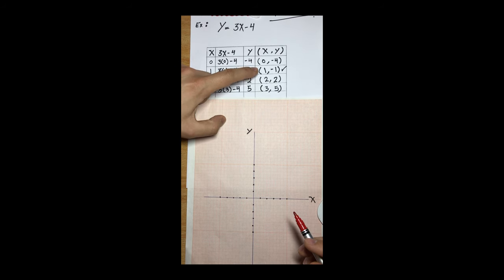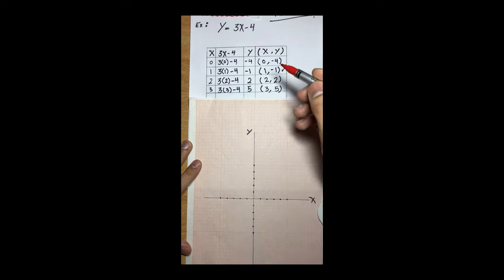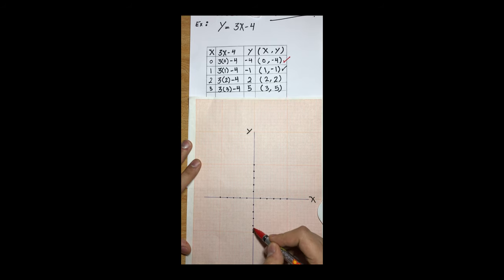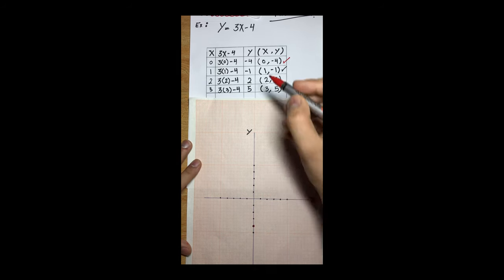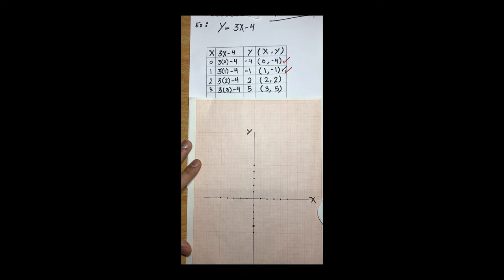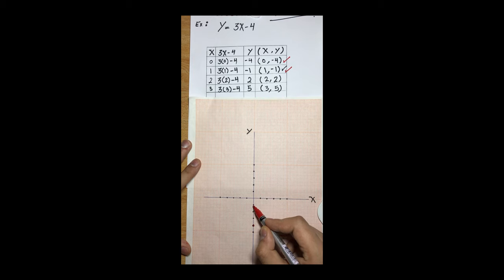Now we have our four points and we have to plot them on the coordinate plane. Starting with the first one: x is zero and y is negative four — that's negative one, negative two, negative three, negative four — this is our first point. For the second point, x is one and y is negative one: x equals one on the positive side, and y equals negative one.